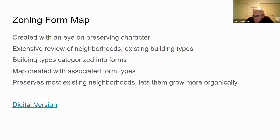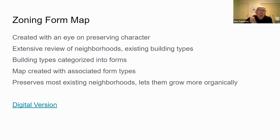The city has done extensive research across the town as to the types of buildings that exist today. They have put into the zone map properties that people do not like. What they're trying to do is preserve the existing character — but that also means there are things that are existing that people don't like that they are also trying to preserve.